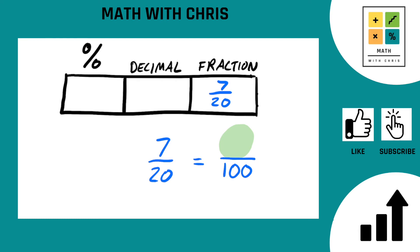Well, along the bottom, 20 to get to 100, we have to multiply by 5, right? 20 times 5 is 100. So we do that on the top as well. 7 times 5. And 7 times 5 is of course 35.